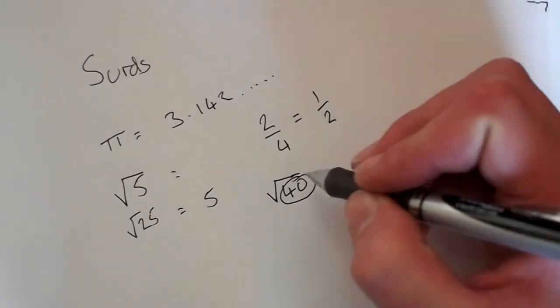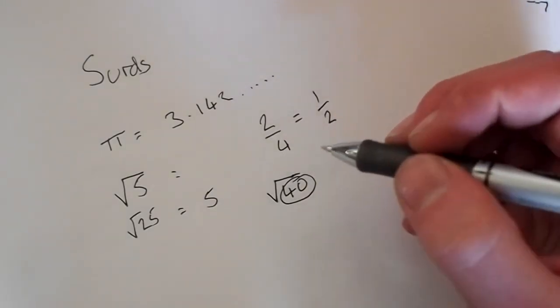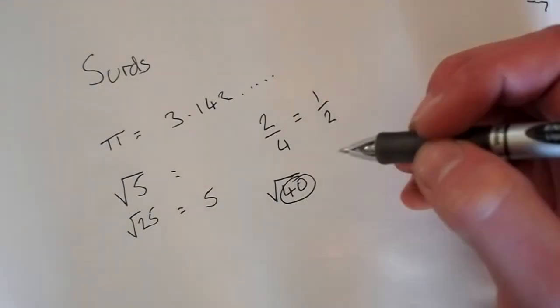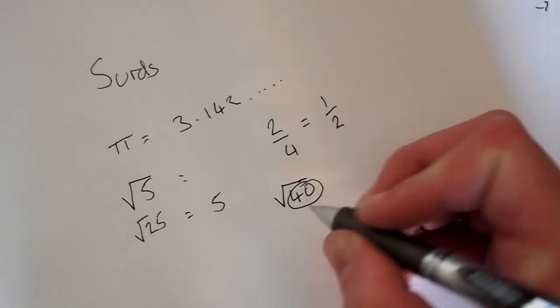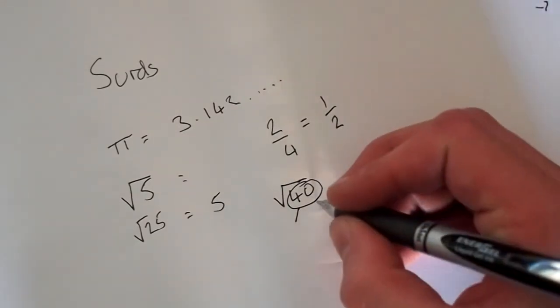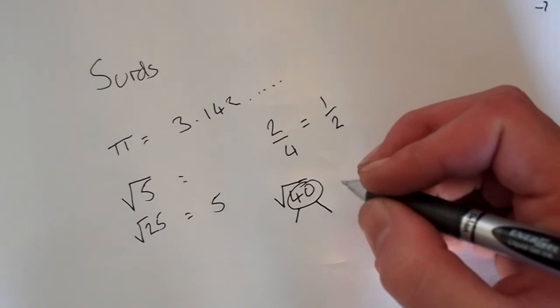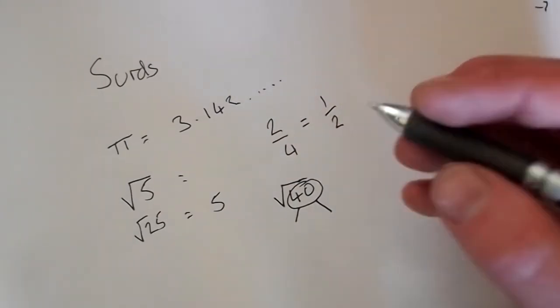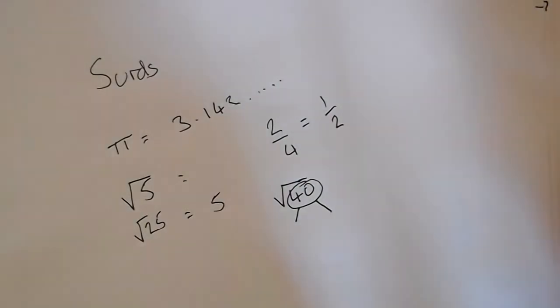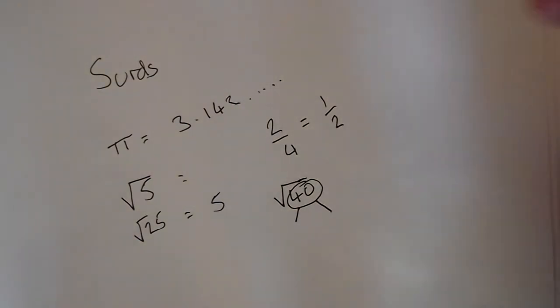So when we first see one of these surds, what we want to do is take the number here and split it up into its factors which make it up. What you are aiming to do when you do this, you're trying to find a factor which is a square number. So you've got your 1, your 4, your 9, your 16, these numbers here.